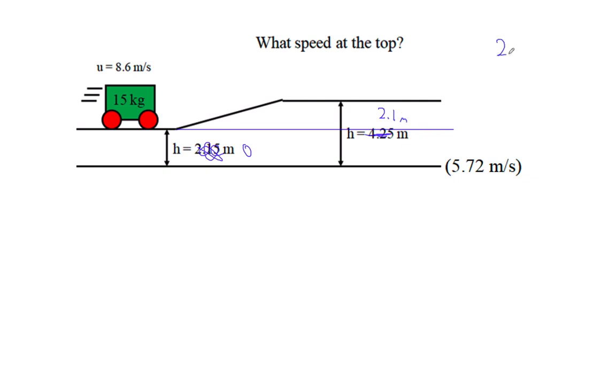In other words, 2.1 plus 2.15 is 4.25, right? So all I had to do was just subtract the 2.15 from the 4.25, and I get that this hill is just 2.1 meters tall.